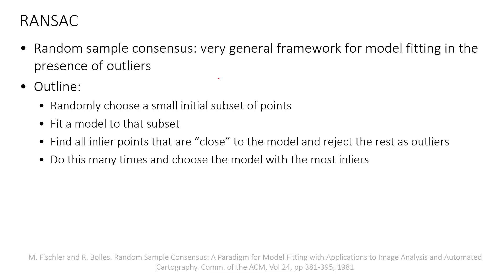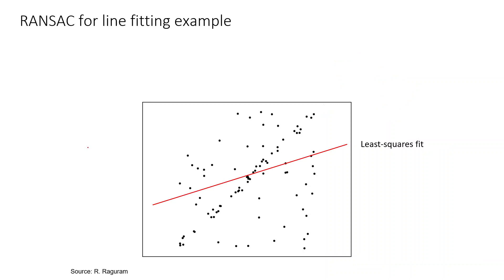The outline of the RANSAC algorithm: we randomly choose a small initial subset of points that can define a model — for a line we need to pick only two points; for a circle, three points; for a homography, four points. Using this subset we fit the model, then find all inliers — points whose distance or residual with respect to the model is less than a threshold t — and reject the rest as outliers. We repeat this as many times as needed and choose the model with the most inliers.